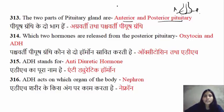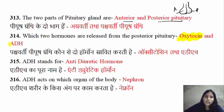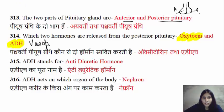Which are the two hormones from the posterior pituitary? The first one is oxytocin, and the second is ADH — also known as vasopressin.